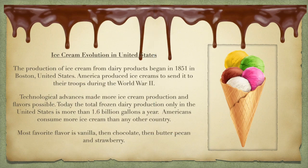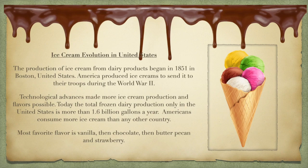The ice cream evolution in the United States began in about 1851 in Boston. America then produced ice cream to send to its troops during World War II. Eventually, technological advances made the ice cream production and more flavors even possible. Today, America makes about 1.6 billion gallons a year.